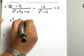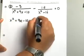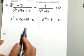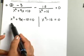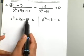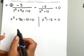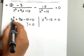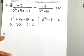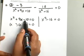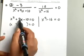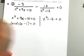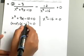So x squared plus 9x minus 10 equals zero, and x squared minus 16 equals zero. For the trinomial, you need to factor x squared plus 9x minus 10. The leading coefficient gives you x and x as the first terms of the factors. The last term is negative 10, and the factors of negative 10 that add to positive 9 are plus 10 and minus 1. So once you factor this, you have x plus 10 times x minus 1.